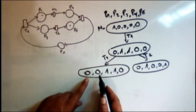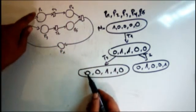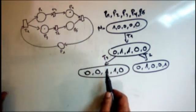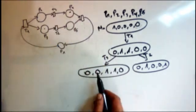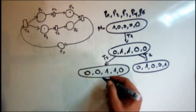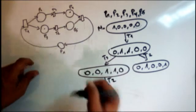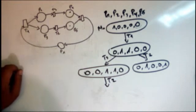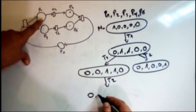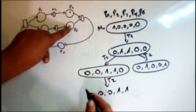Now look at the marking where we have tokens in p2, p3, and p4 — that is the marking after firing T3. From this marking, I can only fire T2. When I fire T2, I remove that token and add one here, giving: zero for p1, zero for p2, zero for p3, one for p4, and one for p5.